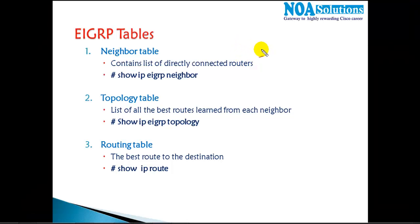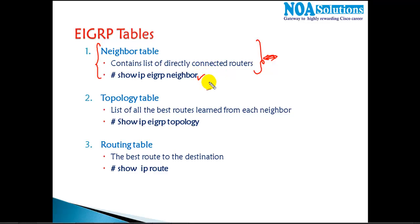When doing basic troubleshooting, the first step is to verify the neighbor table. If the neighborship is up, then routing information will be exchanged between routers. When two routers are not communicating, first check whether they have formed the neighborship using 'show IP EIGRP neighbors'. We will verify this practically in the lab, but right now we're just understanding the different types of tables EIGRP supports.